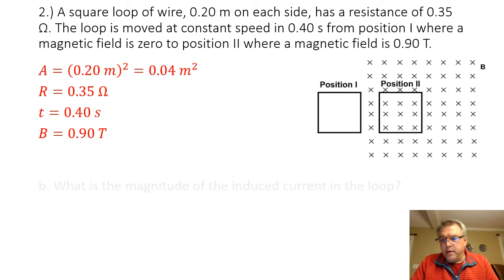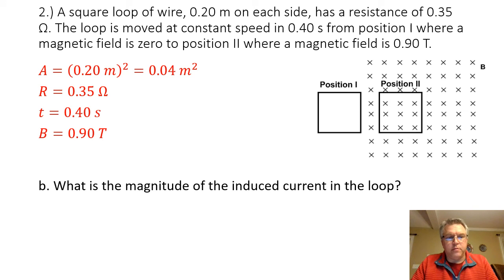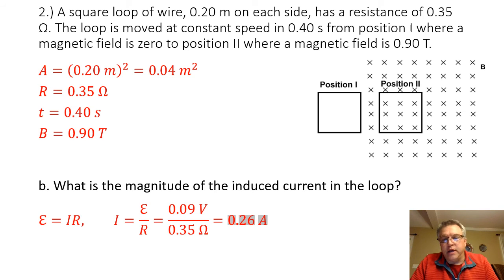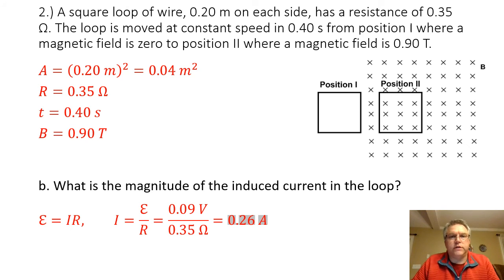The second thing they ask is: what is the magnitude of the induced current in the loop? Just as with the previous problem, to find the induced current we use Ohm's Law, using the induced EMF in place of the regular voltage. The current equals the induced EMF divided by the resistance: 0.09 volts divided by 0.35 ohms gives an induced current of 0.26 amps.